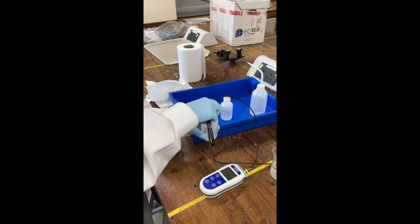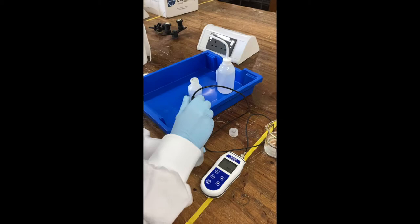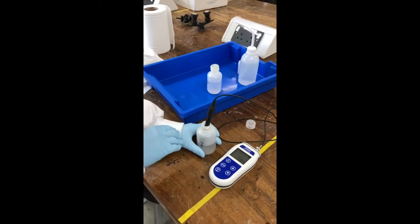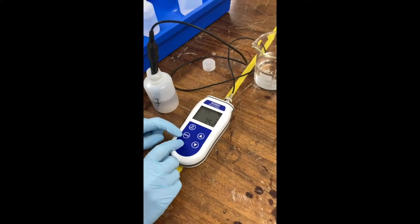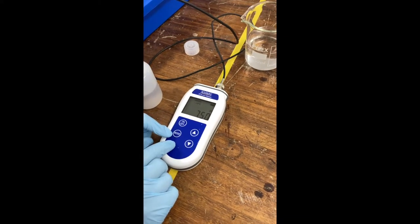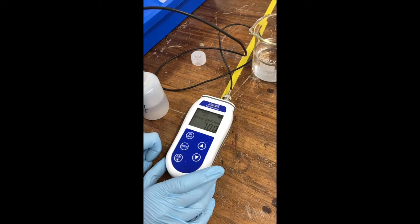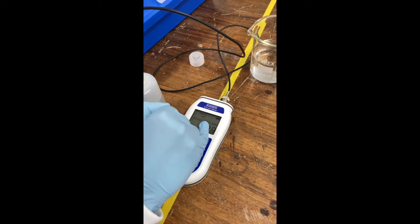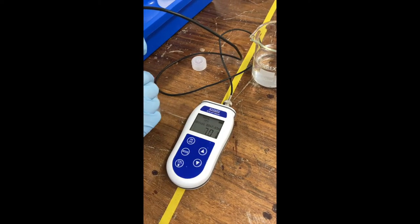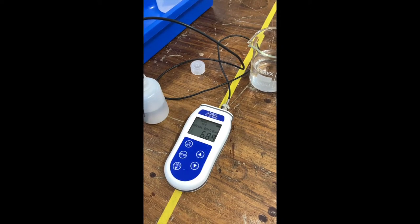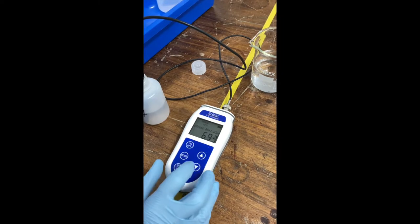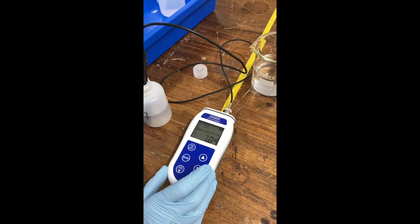And then take your first buffer, normally that would be a pH 7, and place the probe in fully submerging it. You'll then need to press calibrate, and it will guide you there that your first buffer should be pH 7. Wait for the numbers to settle down, and then press calibrate again.